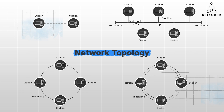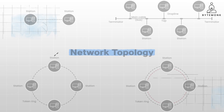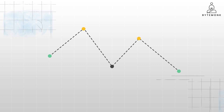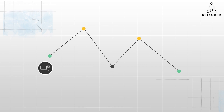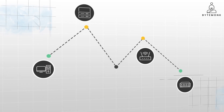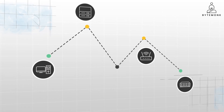Understanding this is key for anyone working in IT, network administration, or even just curious about how your devices are connected. Think of network topology like a map of your network — it shows how all the devices, such as computers, servers, routers, and switches, are physically or logically arranged.